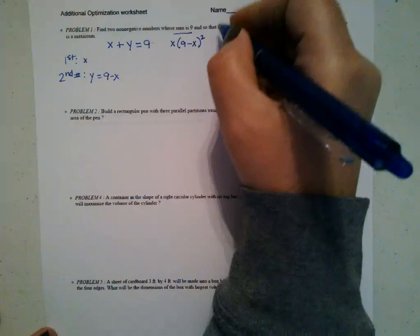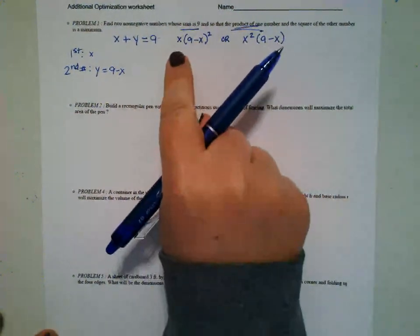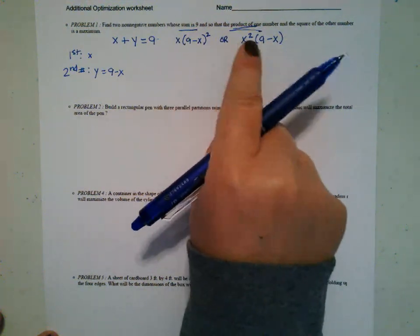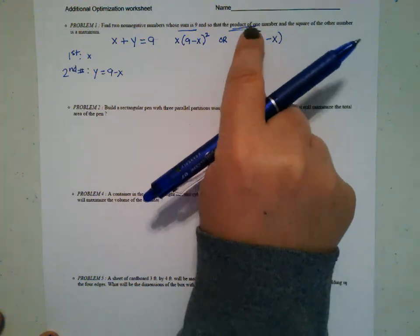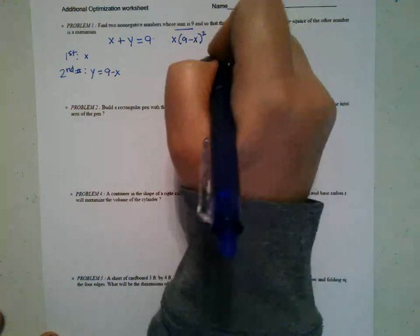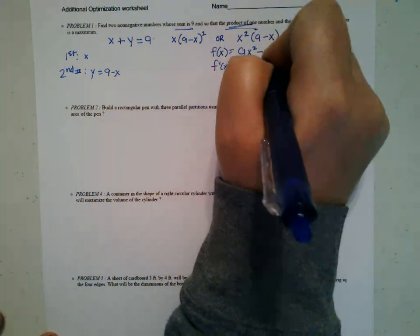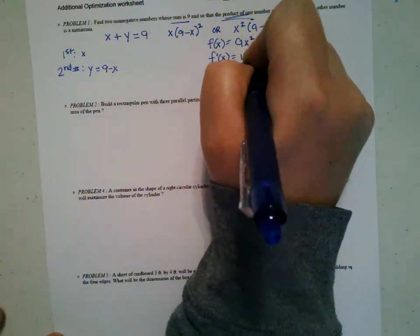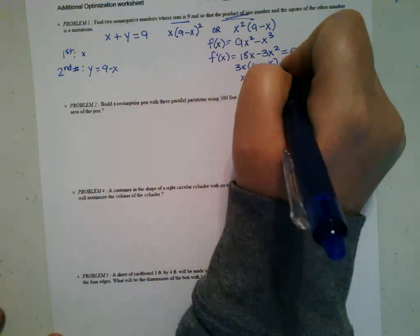I could have the square of the first number times the second number, or either way. One thing to ask yourself is when you go to take the derivative, which form would you rather differentiate? I actually used one form, but I noted that this one — distributing to get nine X squared minus X cubed — would probably be a bit easier. So I let f(X) = 9X² − X³, take the derivative to get 18X − 3X², set it equal to zero, and factor out 3X to get 3X(6 − X) = 0. So X equals zero or X equals six.